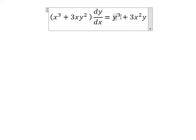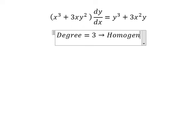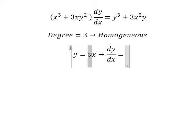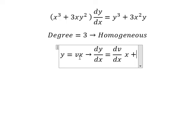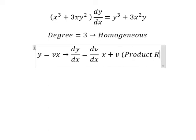This is a homogeneous equation, so I will substitute y equals vx. We differentiate both sides — we have dv over dx multiplied by x, and we apply the product rule.